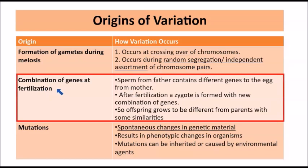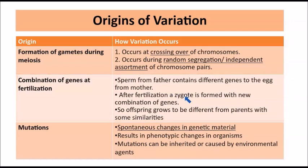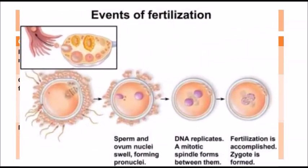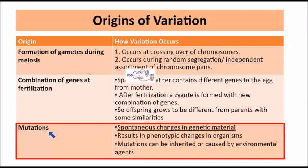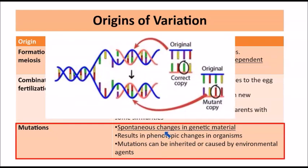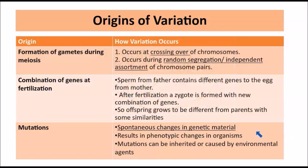Secondly, the combination of genes at fertilization. Fertilization is when the sperm fuses with the egg — the sperm from the father contains different genes and the egg from the mother contains different genes. At fertilization when the zygote is formed, you have a whole new combination of genes, and therefore you would expect the offspring to grow to be different from the parents while also sharing some similarities. The third origin would be mutations — spontaneous changes in the genetic material — which result in phenotypic changes, meaning changes in the characteristics of the organism. Mutations can be either inherited or caused by environmental agents.